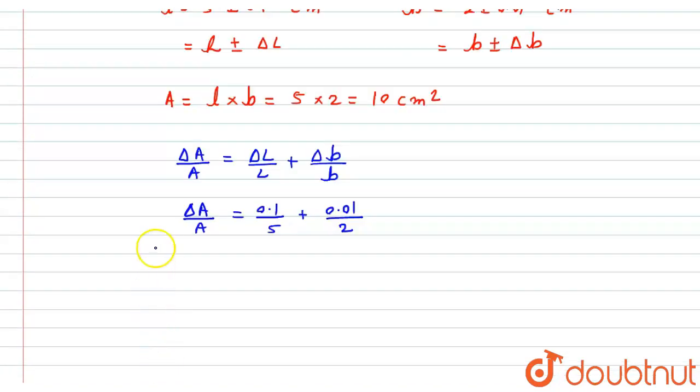Now, as we have already calculated area, that is 10, so if you put, we get delta A divided by 10 will be equals to 0.1 plus 0.01 divided by 5 and this divided by 2. Now, if we common the denominator, we get delta A divided by 10 equals 0.2 plus 0.05, that whole divided by 10.